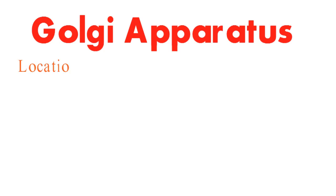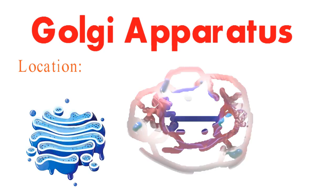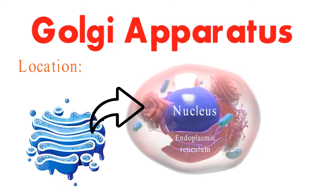You might be wondering where the Golgi apparatus is located within the cell. It's typically found near the nucleus, close to the endoplasmic reticulum. These two organelles often collaborate in the processing and transport of molecules within the cell.